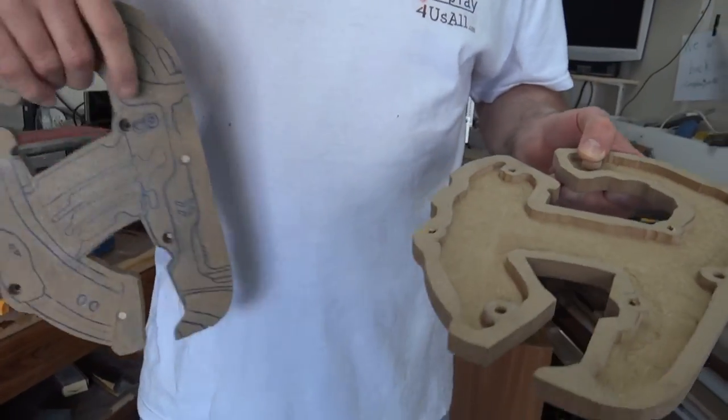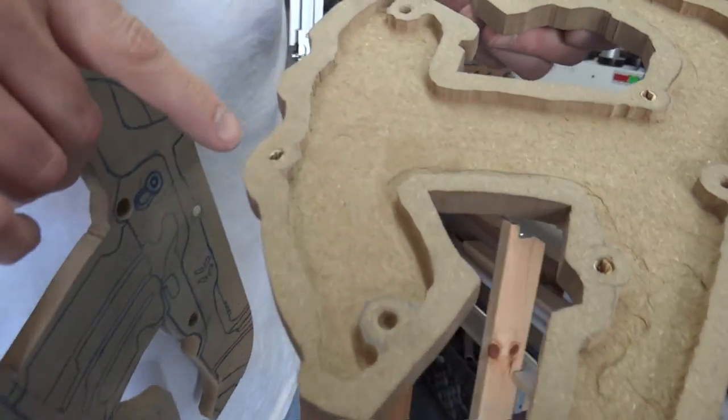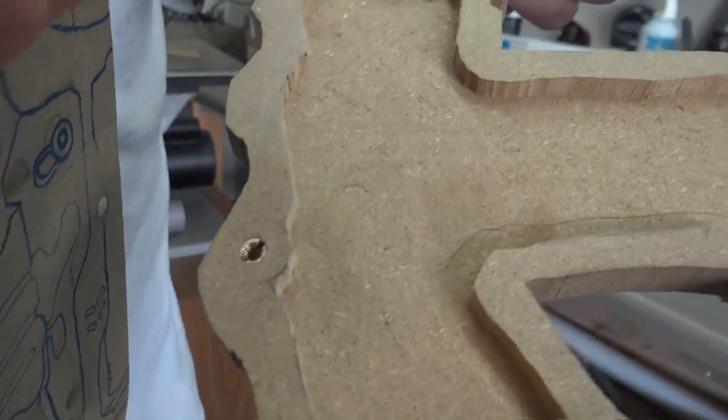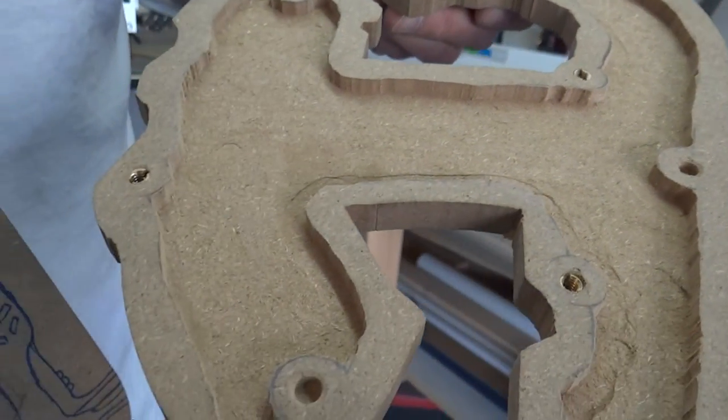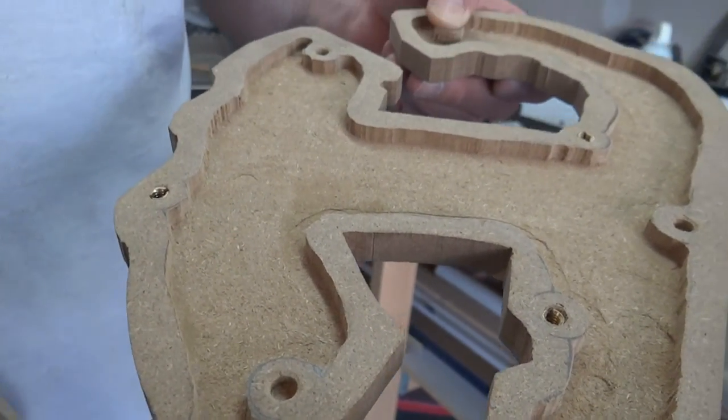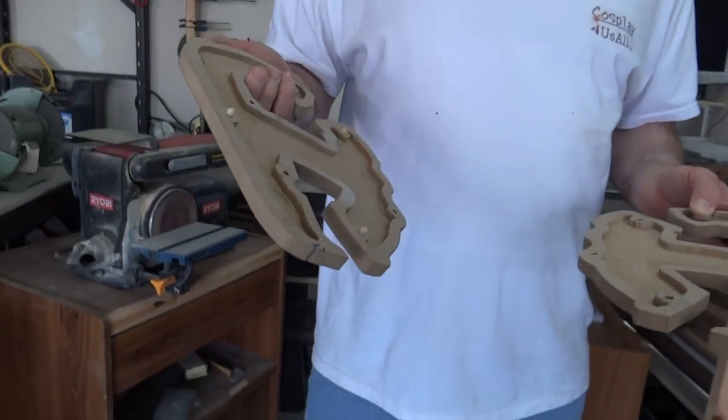Also wanted to point out, I didn't show earlier, I found these little brass inserts. And that's how the hex head screws are going to be able to keep the two halves together.